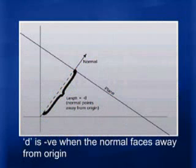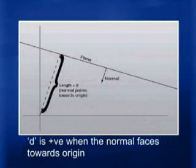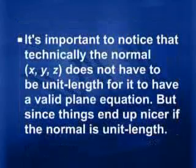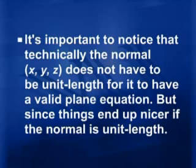When we talk about the normal: if the normal on the plane is drawn facing away from our origin, then D is negative; but if the normal is pointing towards the origin, then D is positive. It's important to note that technically the normal XYZ does not have to be a unit length for a valid plane equation, but if it is a unit vector, it helps keep calculations simple and straightforward.